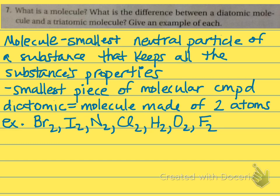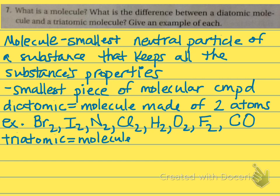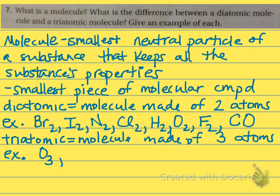Examples of diatomic molecules include the seven diatomic molecules on the posters around your room, and carbon monoxide, which is also diatomic — made of two atoms. Triatomic means a molecule made of three atoms. Examples include ozone gas, O3, which makes up our atmosphere, and water, which is triatomic because it's made of two hydrogens and one oxygen.